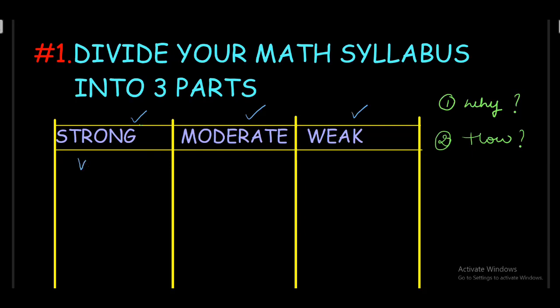Divide all the chapters into these three columns. For example, you can say that vectors you feel you're good at, limit continuity differentiability is moderate, and you might be weak at mean value theorem. Like this, all the chapters you divide into three portions.